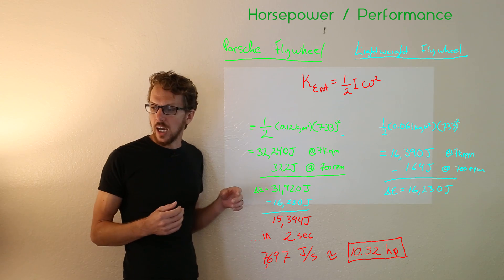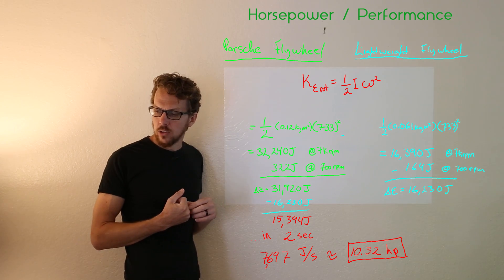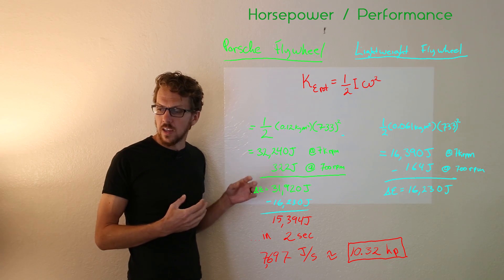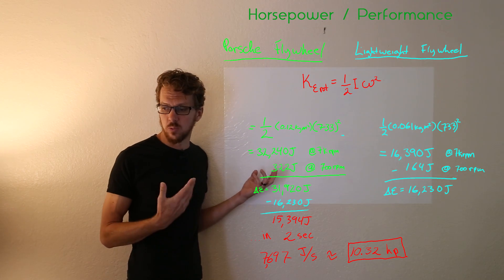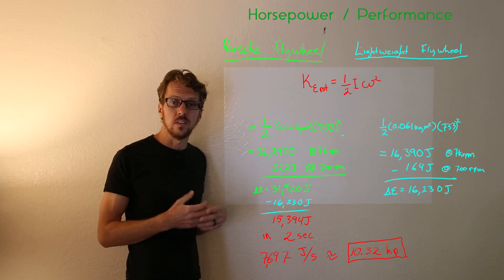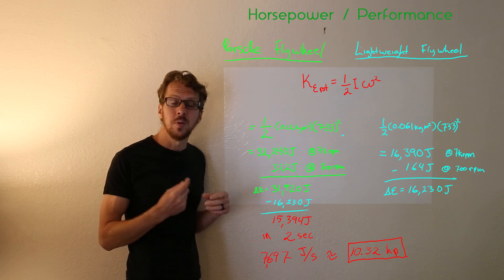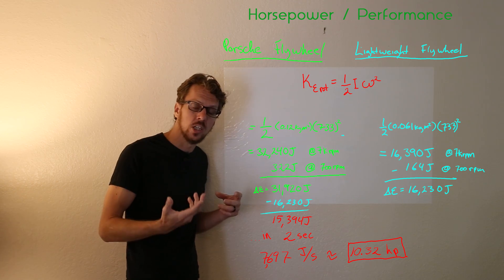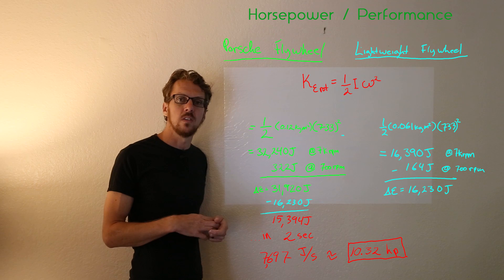Now if you look at the lightened flywheel example you have the same calculation. In this case the flywheel only has 164 joules of energy at idle and it only has about 16,000 joules of energy when it's spinning at 7000 RPM. Again about half the energy which means that it takes about half the energy to spin it up to the same speed.